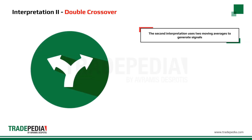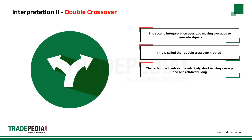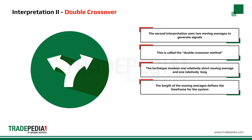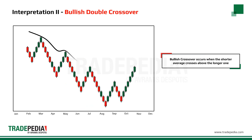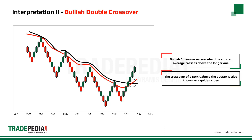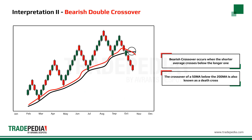The second interpretation uses two moving averages to generate signals — this is called the double crossover method. It involves one relatively short moving average and one relatively long. A system using a 5-day MA and a 20-day MA would be deemed short-term, whereas a 50-day MA and 200-day MA is considered long-term. A bullish crossover occurs when the shorter moving average crosses above the longer one; the crossover of the 50 MA above the 200 MA is also known as a golden cross. A bearish crossover occurs when the shorter crosses below the longer, known as a death cross.